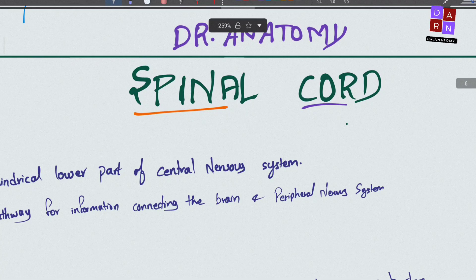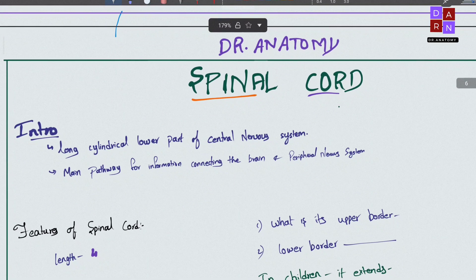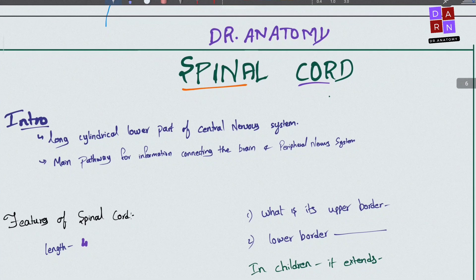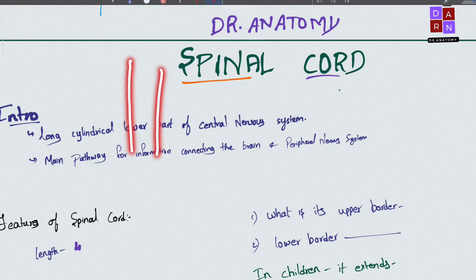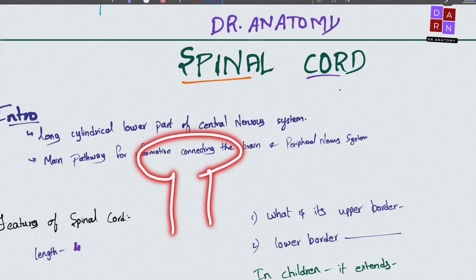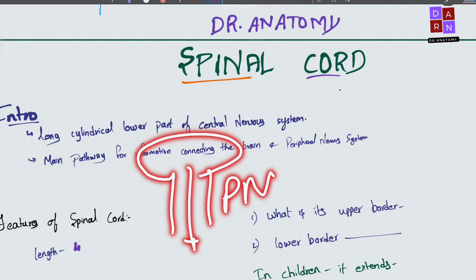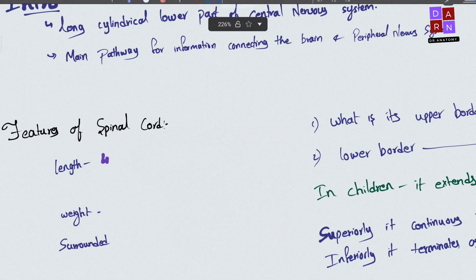Today we are going to discuss the spinal cord — its internal features, external features, and its coverings. The spinal cord is a long cylindrical structure present in the lower part of the central nervous system. Its main pathway is transforming information from the brain to the peripheral nervous system.